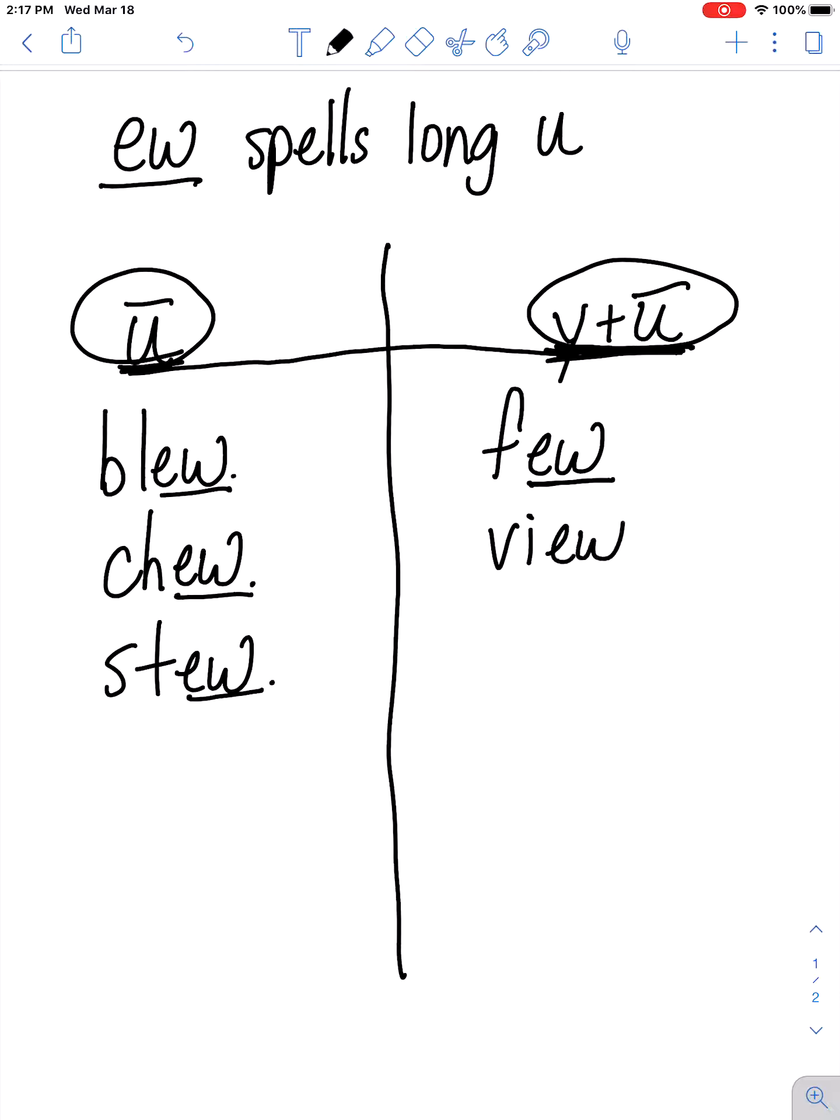Another example is the word view. We don't say voo, we say view with a Y sound in there, spelled EW. And one more example would be the word review, which is very similar to view. We say review with that glided you sound.